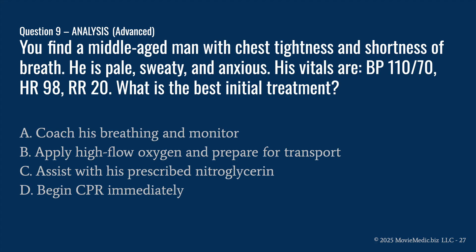Question nine. You find a middle-aged man with chest tightness and shortness of breath. He is pale, sweaty, and anxious. His vitals are blood pressure 110 over 70, heart rate 98, and respirations 20. What is the best initial treatment? A: Coach breathing and monitor. B: Apply high flow oxygen and prepare for transport. C: Assist with his prescribed nitroglycerin. Or D: Begin CPR immediately.